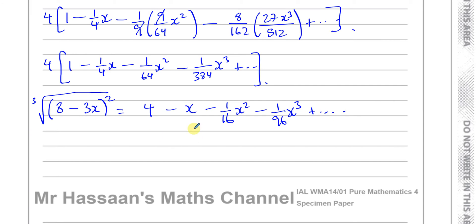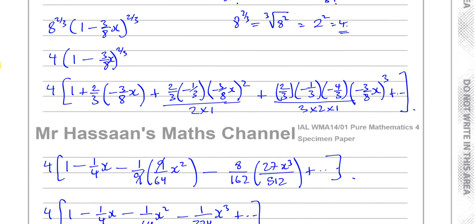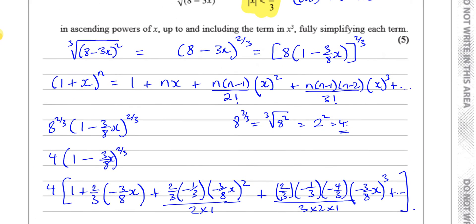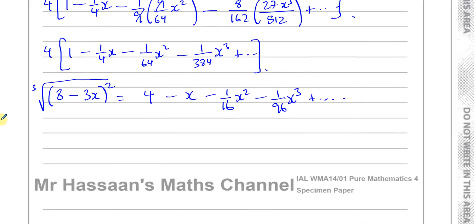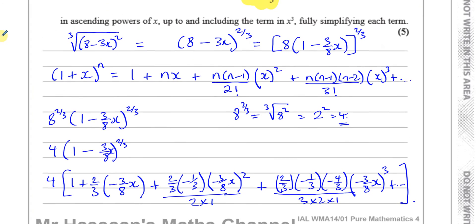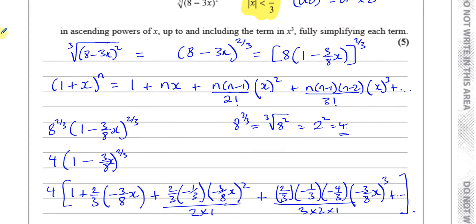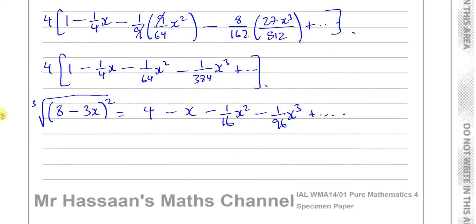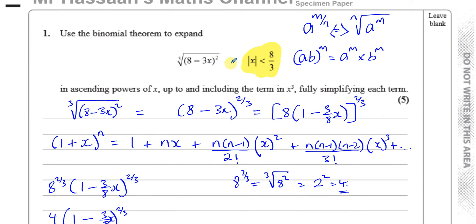So the final answer is: the cube root of (8 minus 3x) squared equals 4 minus x minus 1 over 16 x squared minus 1 over 96 x cubed plus higher order terms. That answers the question — expanded up to and including the term in x cubed, fully simplified. That's worth 5 marks. In this question we didn't need to use the validity condition, but sometimes they ask you to give the range of values of x for which the expansion is valid.